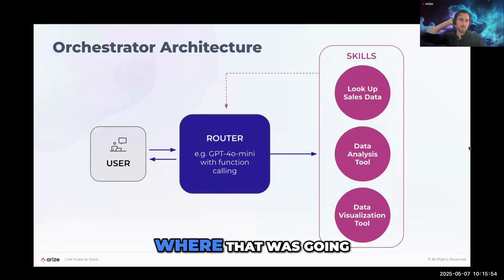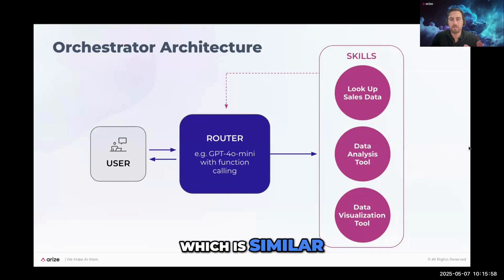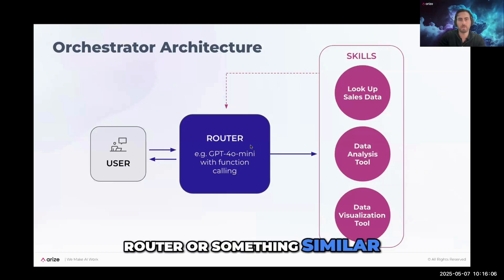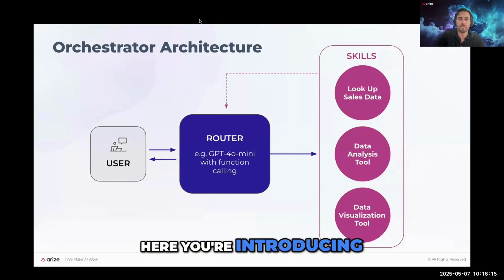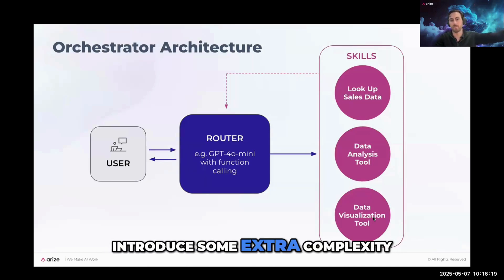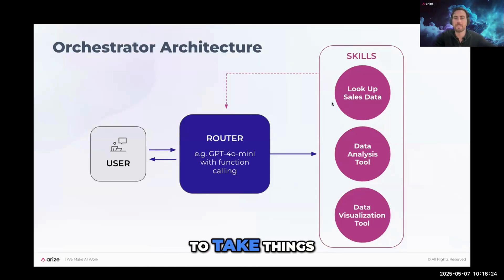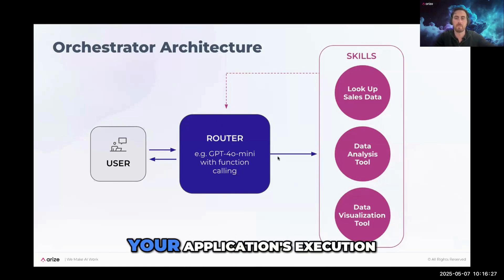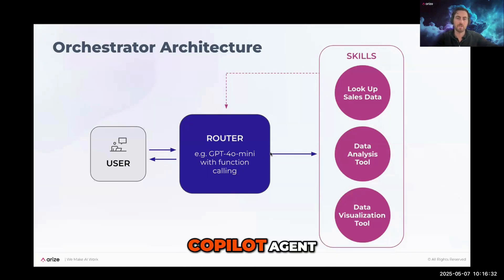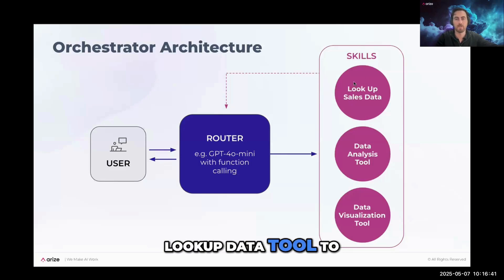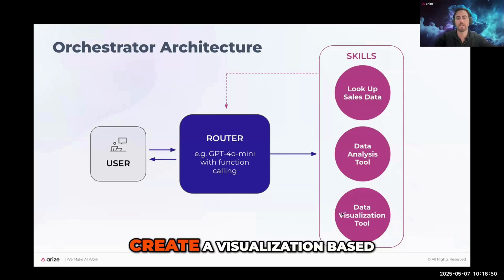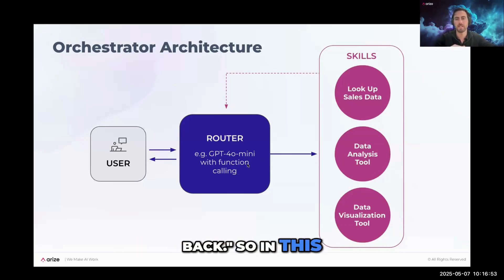The next is the more complex orchestrator architecture, similar to the router but with one key difference: after a skill completes, you return to your LLM router to decide whether to call another tool or return to the user. This introduces looping, which adds complexity with multiple LLM calls, but lets you feed skill outputs back into execution. For example, the database copilot might first look up data, then decide to create a visualization before sharing the result.